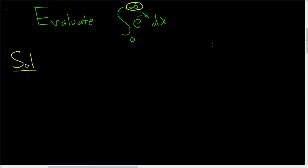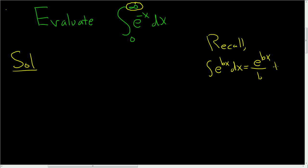First we have to integrate. Recall the integral of e to the bx dx is just e to the bx divided by b plus a constant, where b is not 0. So we have the improper integral from 0 to infinity of e to the negative x with respect to x.